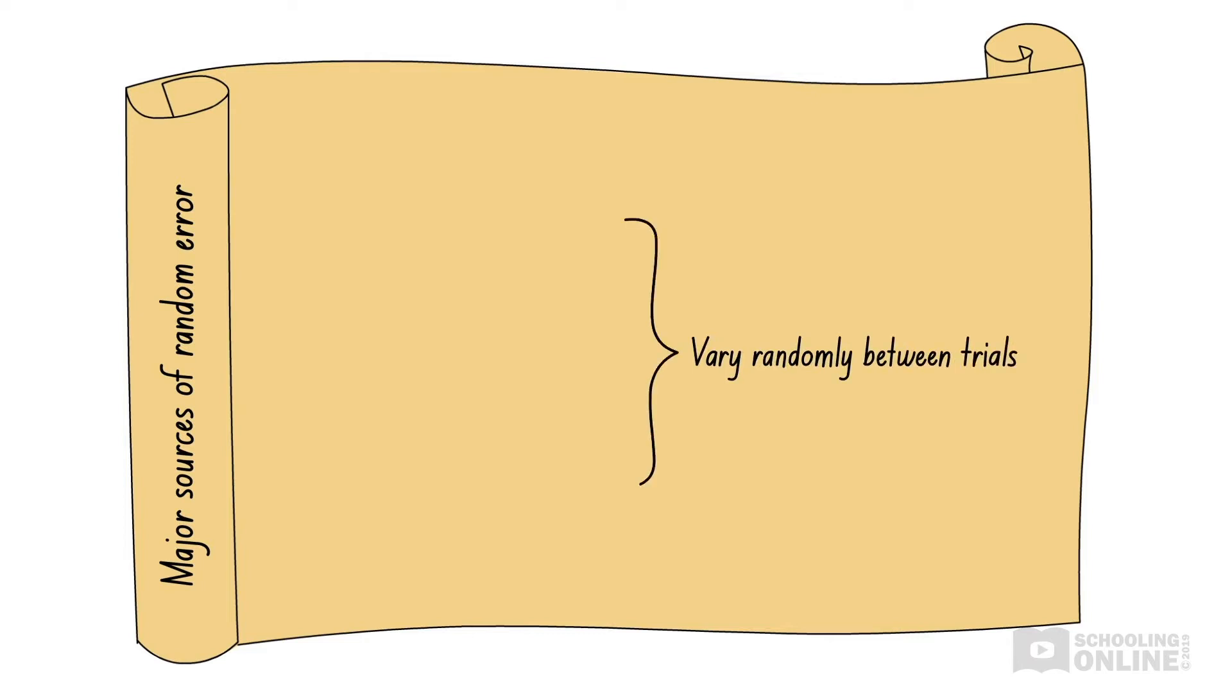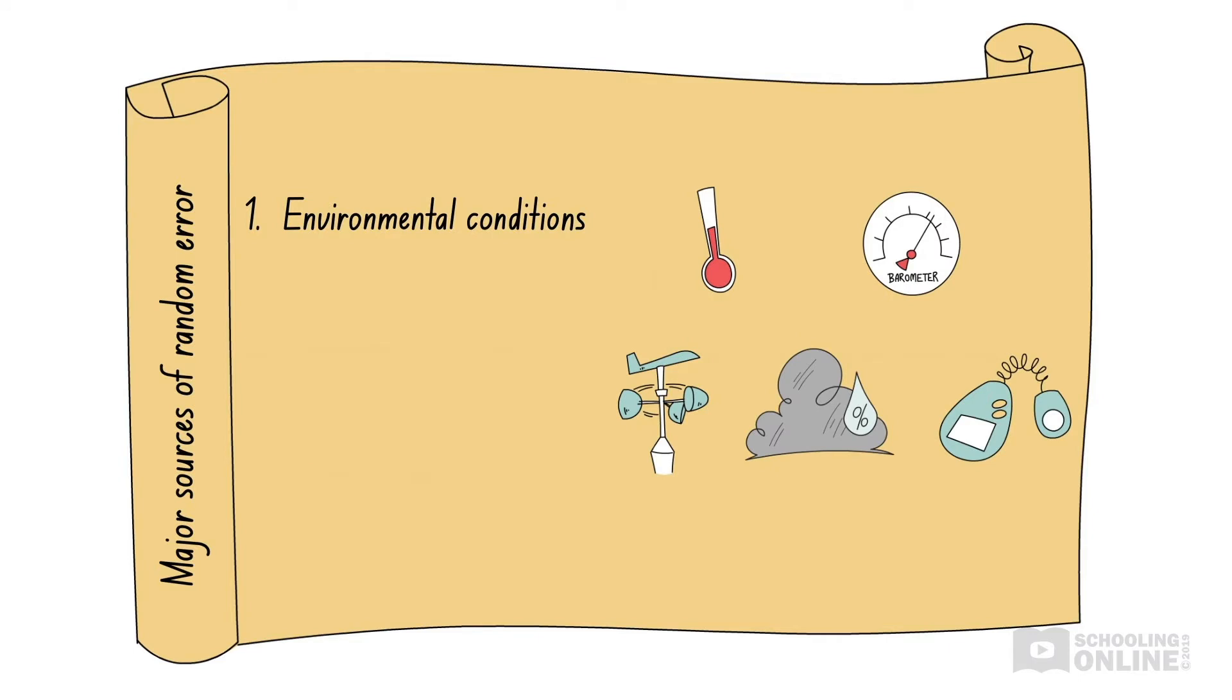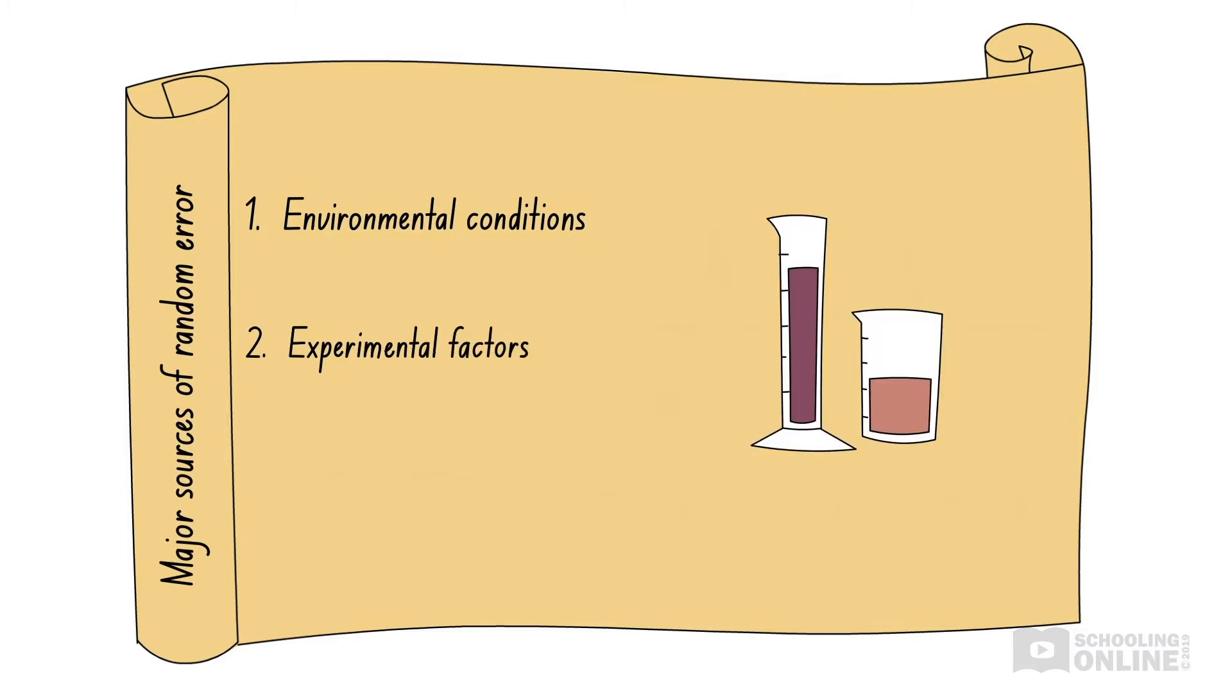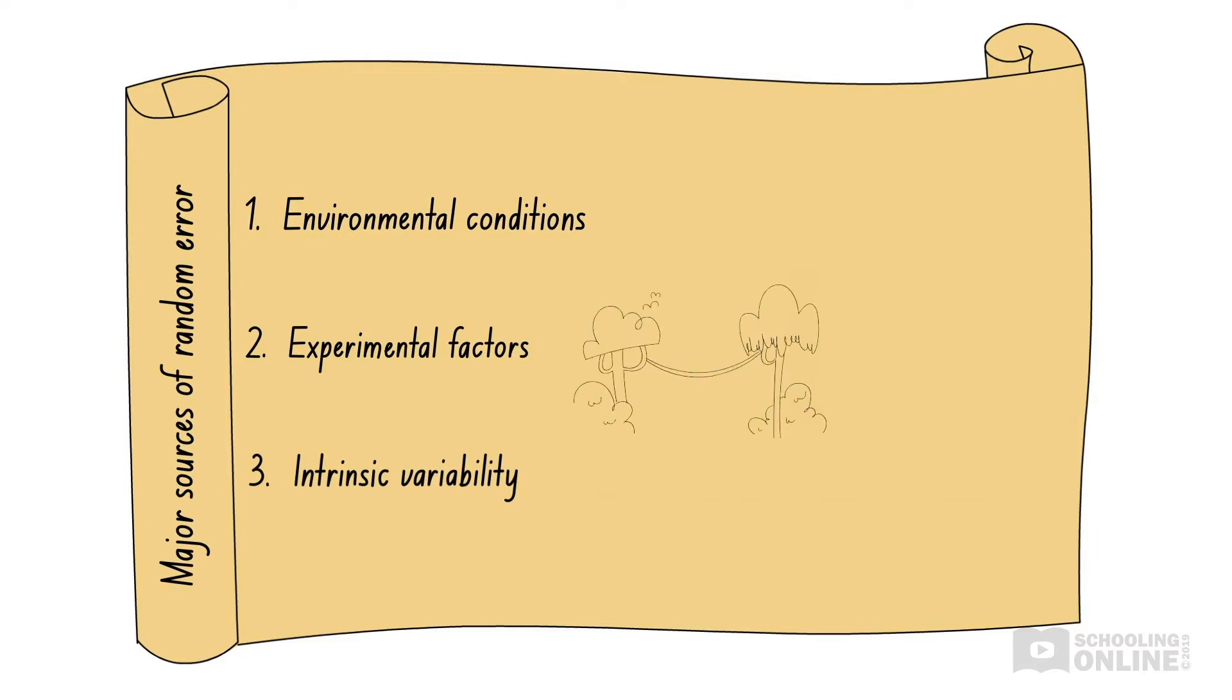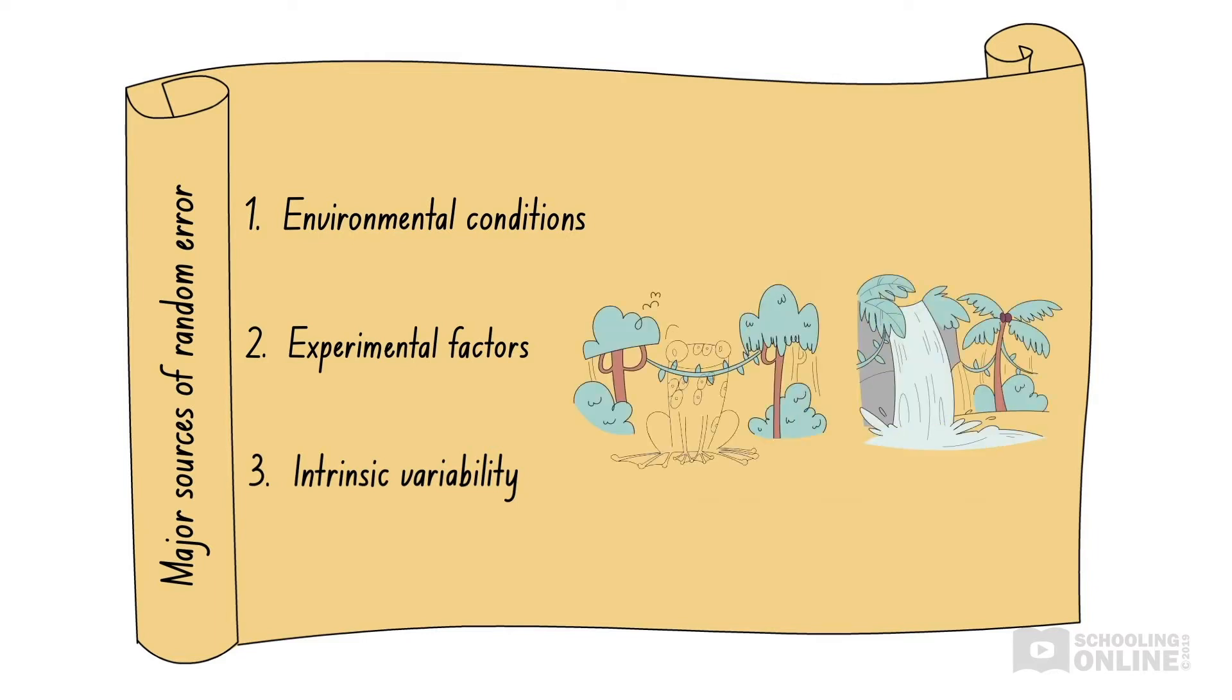In biology, there are three main sources of random errors – environmental conditions, experimental factors and intrinsic variability. Environmental conditions include variables such as temperature, atmospheric pressure, wind speed, humidity and light intensity. Experimental factors are associated with the materials and apparatus used in the experiment, such as the masses and volumes of chemicals. Meanwhile, intrinsic variability refers to the inherent differences between samples, such as different locations in a rainforest, different organisms of the same species and different cells within an organism.